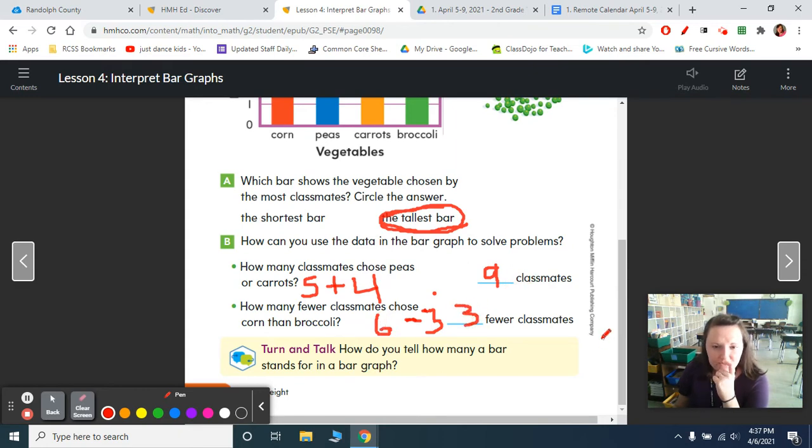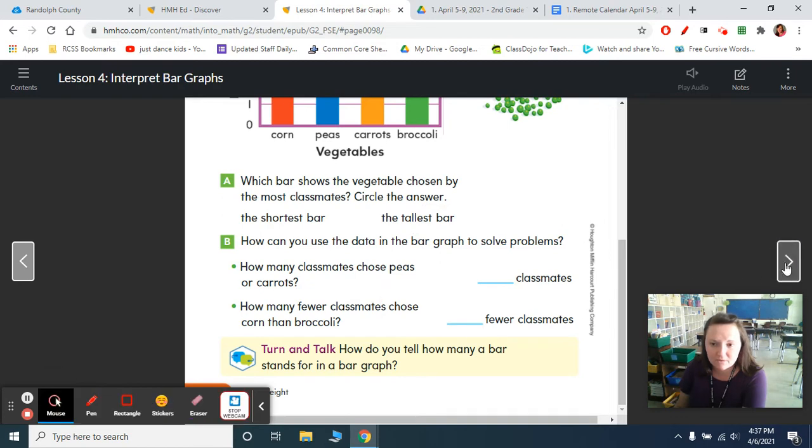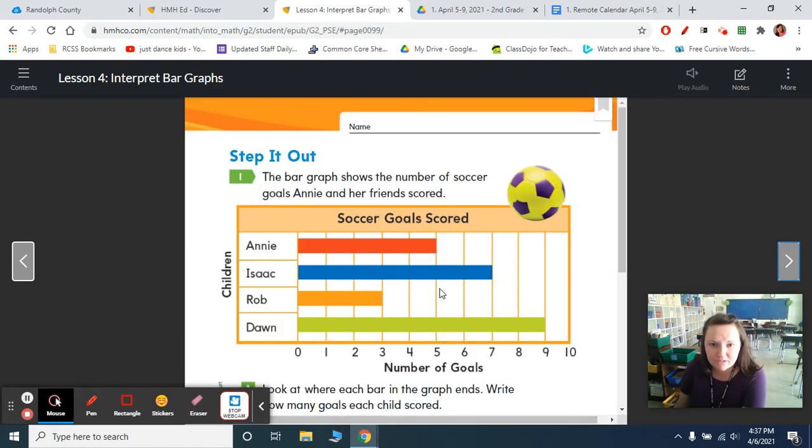How do you tell how many a bar stands for in a bar graph? Well, you count up and you find the little numbers that it's next to. All right, I'm assuming you wrote that all down. I'm going to clear the screen and we're going to move on to the next one.